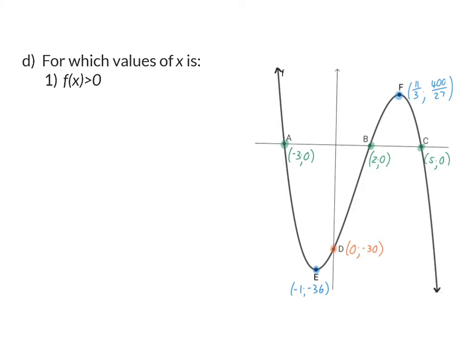Question D: for which values of x is F(x) bigger than zero? F(x) > 0 means where are the y-values positive — where is this graph above the x-axis? Looking at the sketch, there are two places: to the left of coordinate A, and between B and C. So our answer has two parts: x < -3, or 2 < x < 5.